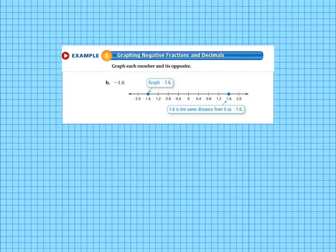Now we'll look at example 1b. We are again going to graph a number and its opposite, but this time the number is a decimal. So the number that we are given is negative 1.6. So we have a number line with everything marked in decimals. So we have negative 0.4, negative 0.8, negative 1.2 and negative 1.6. So that's where we put our mark. And then the opposite of negative 1.6 is 1.6 because it's the same distance away from 0. So we graph that on the right-hand side.